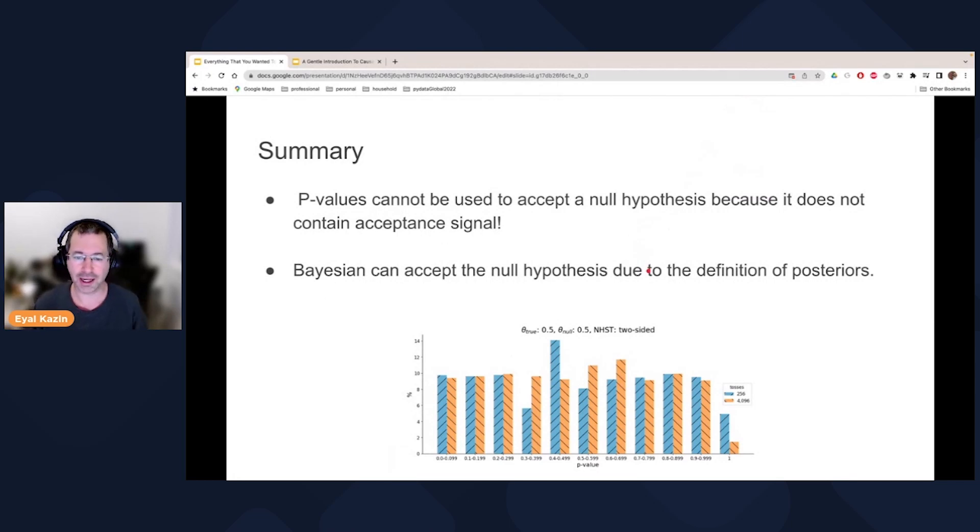So to summarize what I wanted to communicate today, p values cannot be used to accept a null hypothesis because it doesn't contain any signal. That's what we saw in this chart over here. And if you want a mechanism to accept a null hypothesis, then you want to go Bayesian. Thank you.